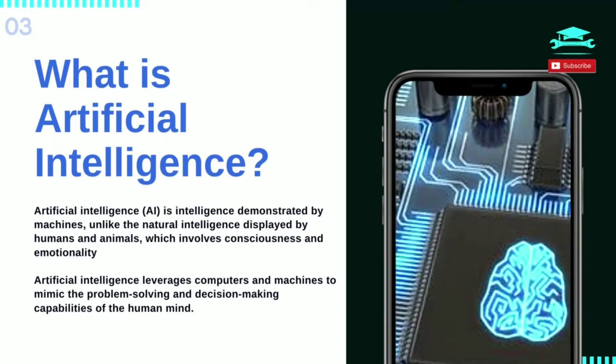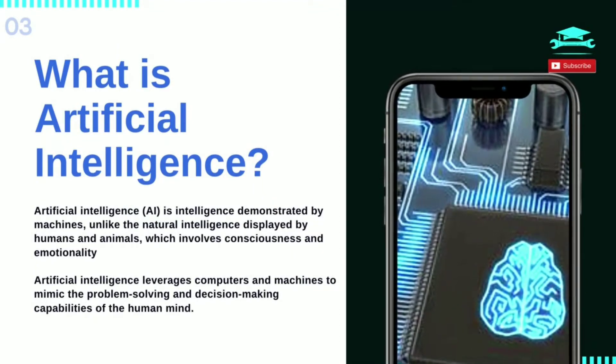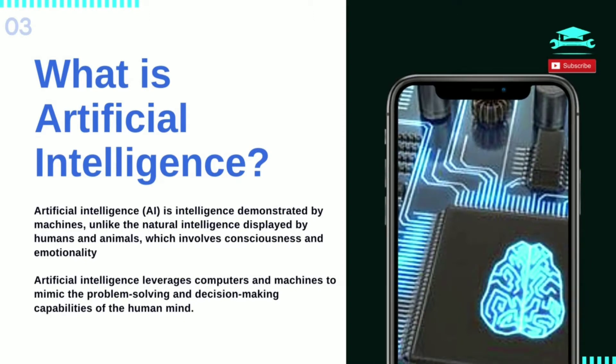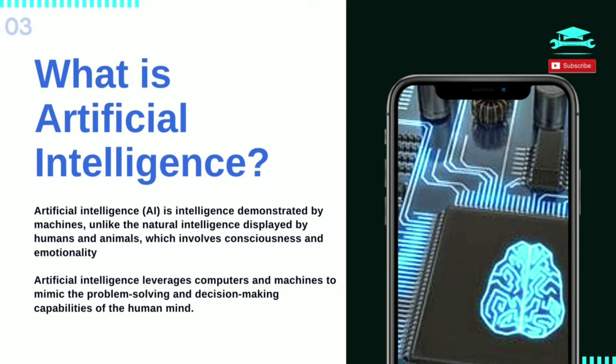Artificial intelligence is the intelligence demonstrated by machines, unlike the natural intelligence displayed by humans and animals, which involves consciousness and emotionality. AI leverages computers and machines to mimic the problem-solving and decision-making capabilities of the human mind. It is the science and engineering of making intelligent machines, especially intelligent computer programs. It is related to using computers to understand human intelligence, but AI does not have to confine itself to methods that are biologically observable.